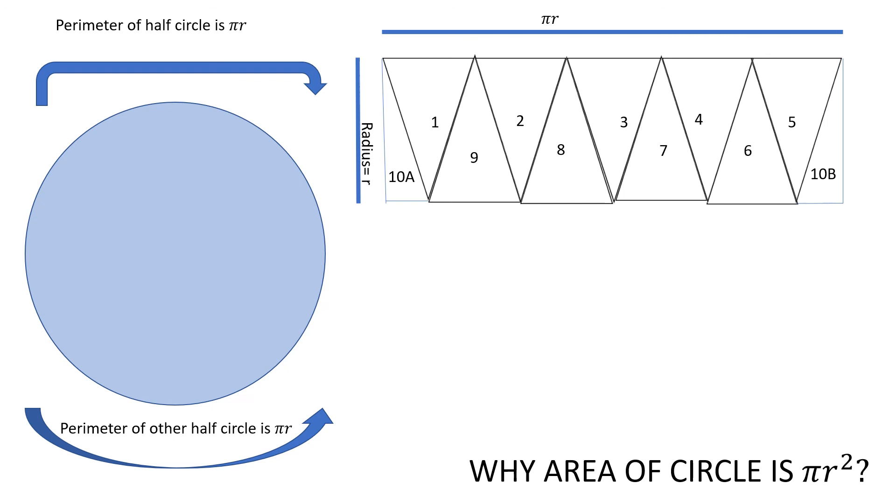And we can see that the length of a rectangle is pi r, and the width is r. And so, the area of this rectangle made from the circle is pi r times r, which is pi r squared. And that's how we get the area of the circle.